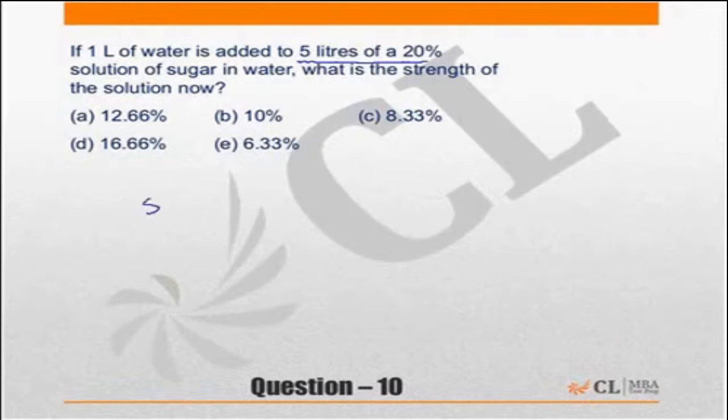So in 5 liters, 20% sugar implies 1 unit of sugar. If I add 1 liter of water, it becomes 6 liters with 1 liter of sugar, so sugar will be 1 by 6.